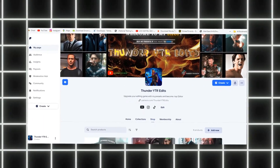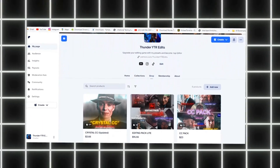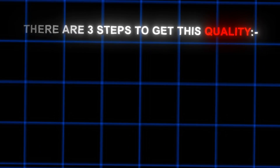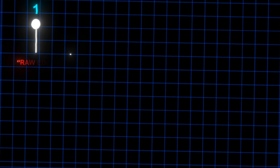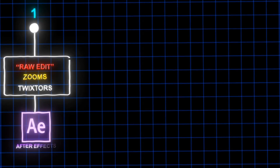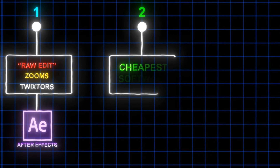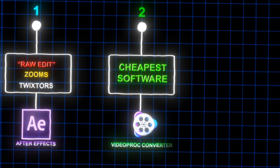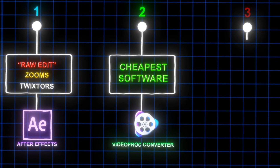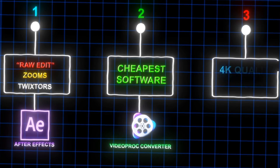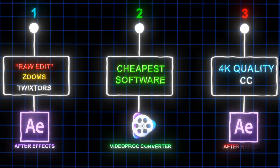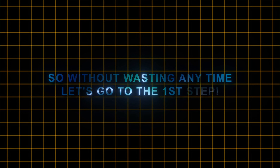Now if you want my exact settings for the best quality CC, make sure to check out the first link in the description. There are 3 steps to get this quality. First, we will make a raw edit in After Effects with zooms and Twixtor. Second, we will enhance our edit with the cheapest software named Video Proc Converter and make it beautiful. Third and last, we will make a 4K quality CC for the edit inside After Effects again. So without wasting any time, let's go to the first step.